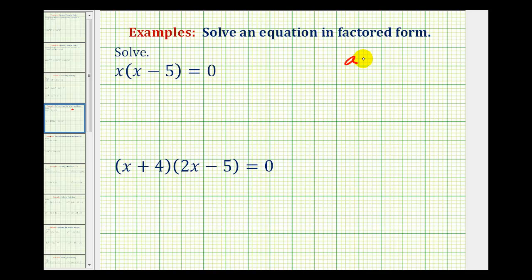meaning if we know that a times b is equal to zero, meaning we're multiplying these together and the answer is equal to zero, then either a must equal zero or b must equal zero.